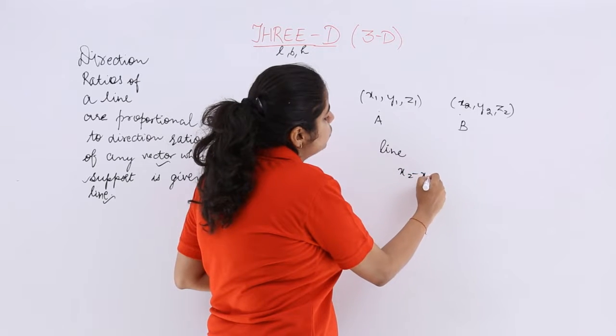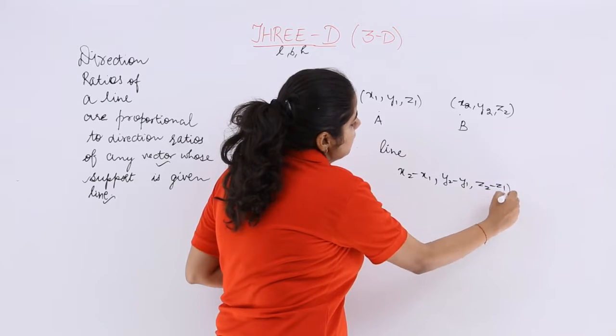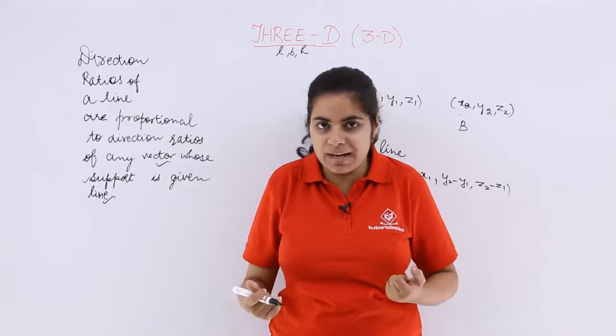So direction ratios would be x2 minus x1, y2 minus y1, z2 minus z1. So your direction ratios will be proportional to this. That is the only matter of fact.